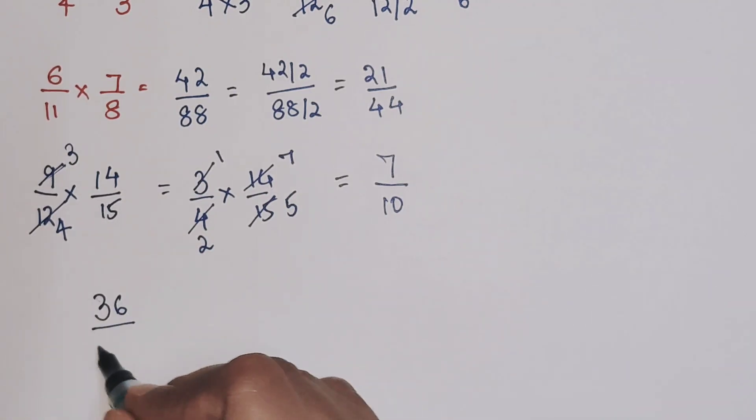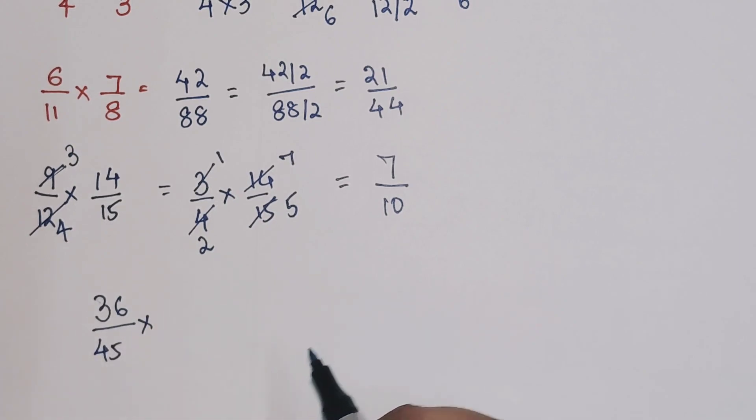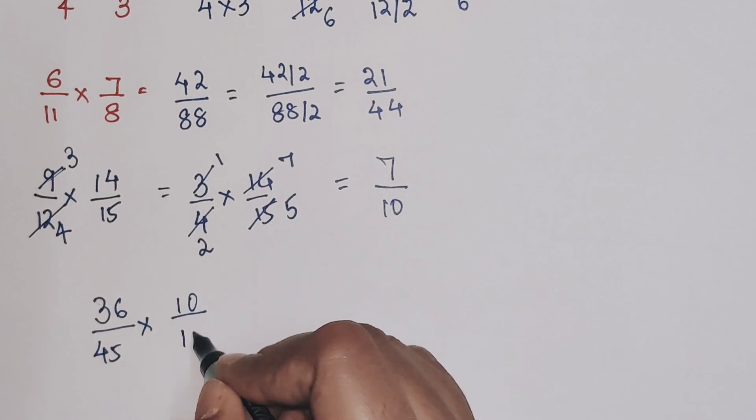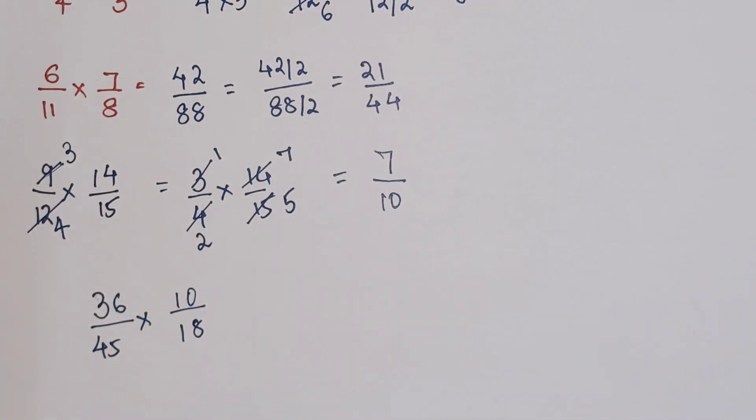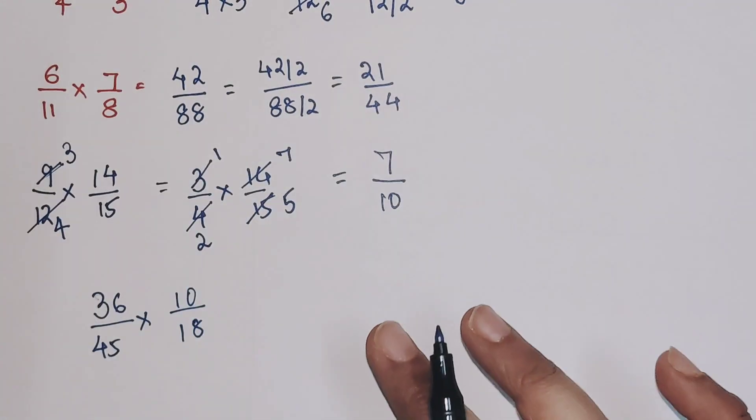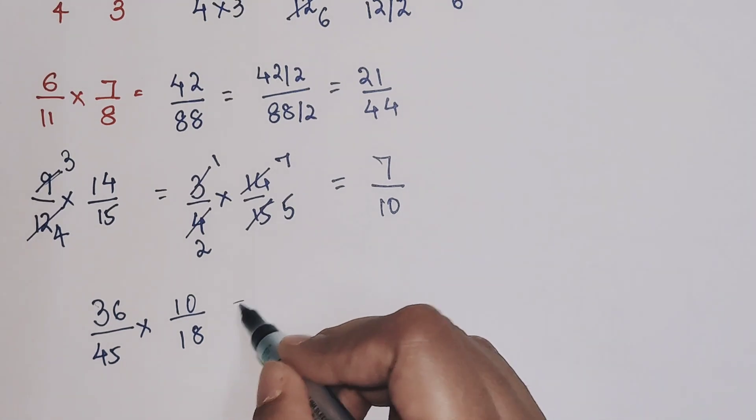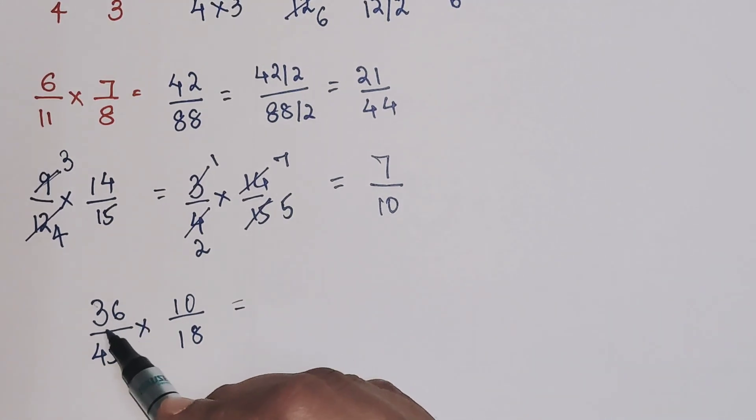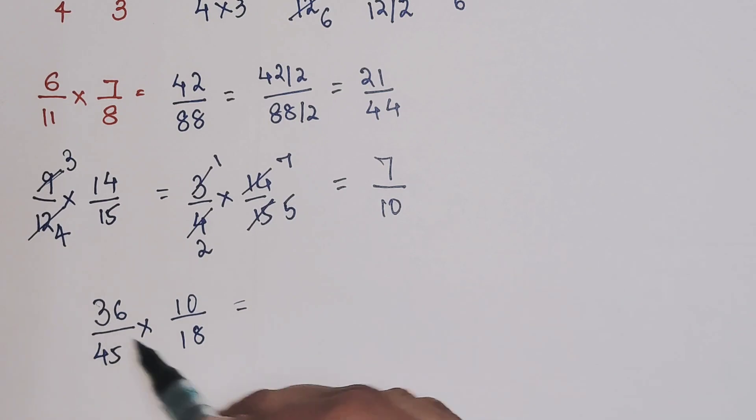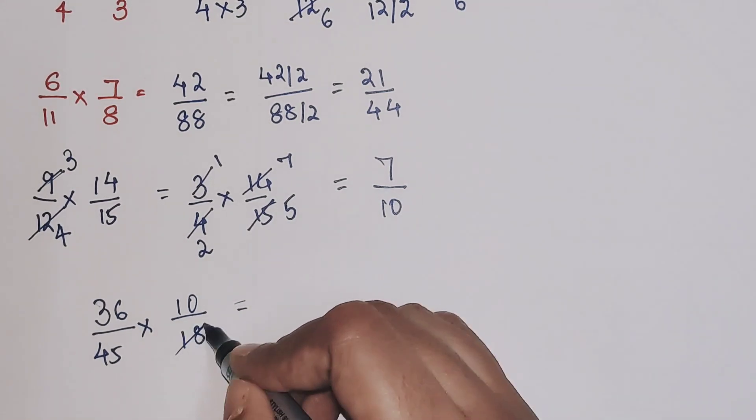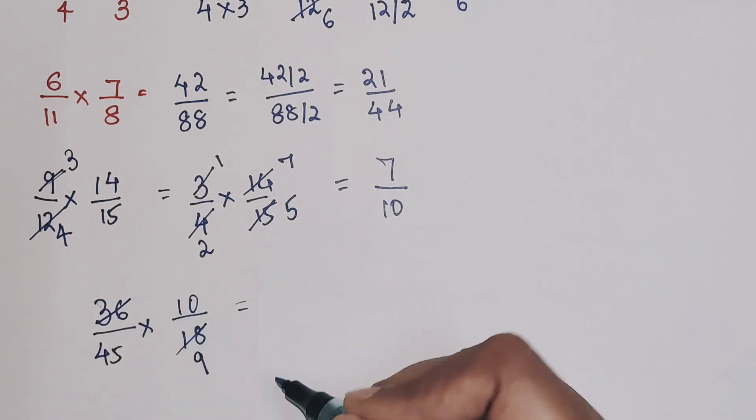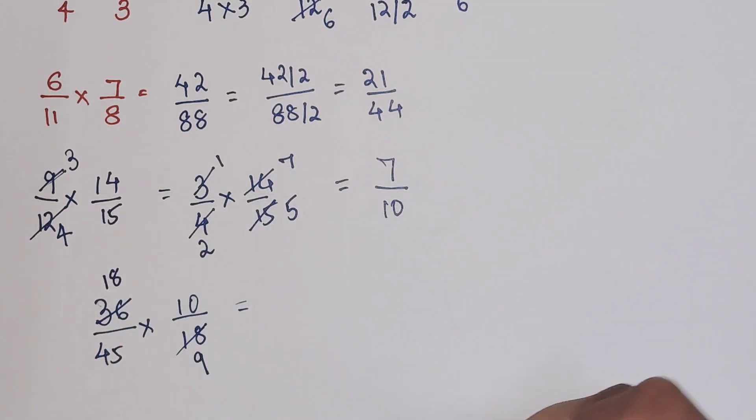Now let's look at another one. Let's see 36 upon 45 into 10 upon 18. So now, you can just take a pause at this video and do it on your own, or let's do this with me. So now again, 36 and 18 are both even numbers. So let's divide that by 2. 18 when divided by 2 gets you 9, and 36 when divided by 2 gets you 18.